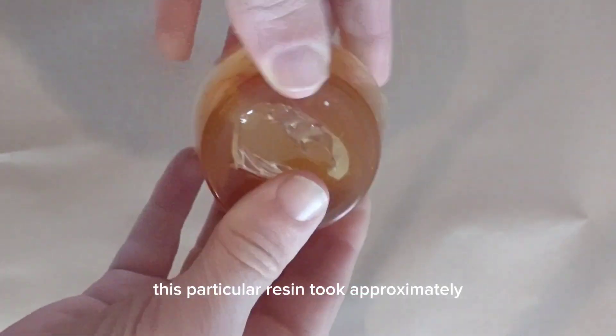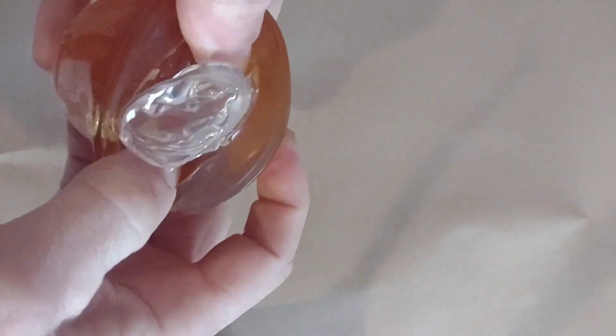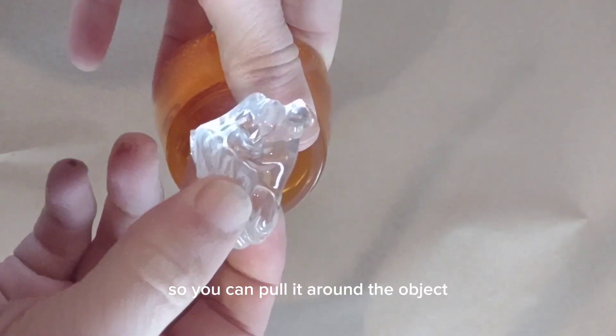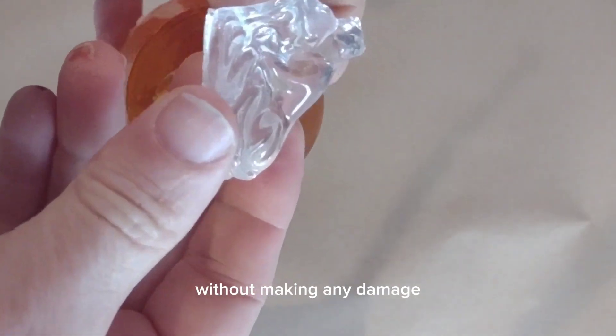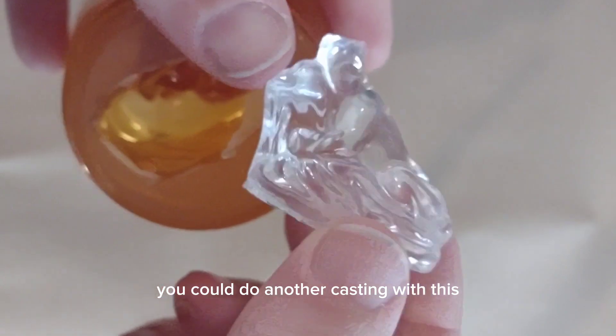Let this cure. This particular resin took approximately 10 to 15 hours to cure and we now pull it out of the mold. The composite mold is very flexible so you can pull it around the object without making any damage. And there is our duplicated figurine.